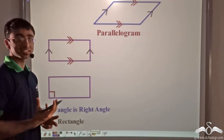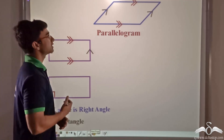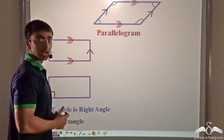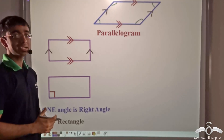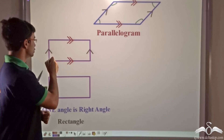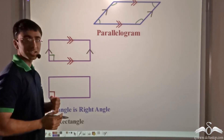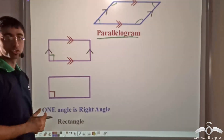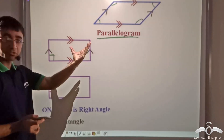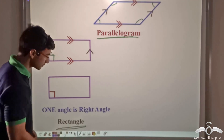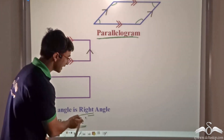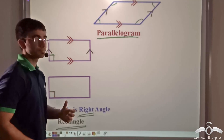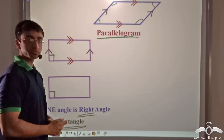We now consider special cases of a parallelogram. A parallelogram has four angles. If one angle is considered a right angle, while opposite pairs of sides remain parallel, we get a special kind of parallelogram known as a rectangle. The word 'rectangle' means right angle.